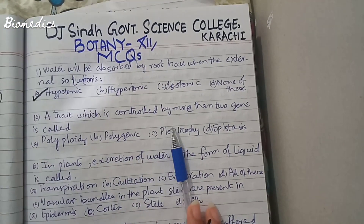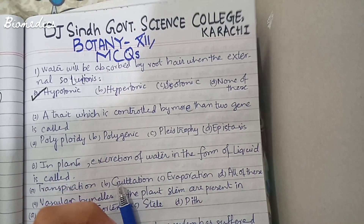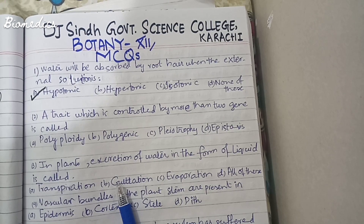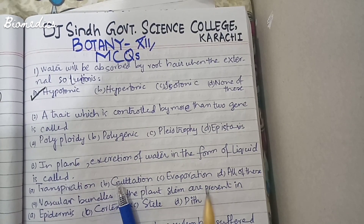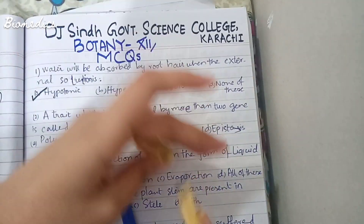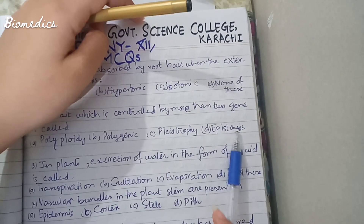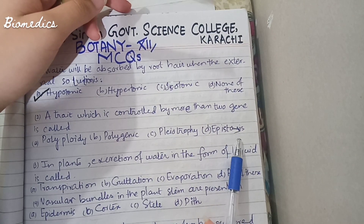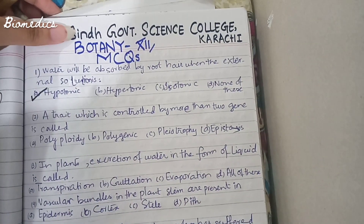The next question: a trait which is controlled by more than two genes is called — what? We will discuss one more option to clearly identify the best answer. Many people know epistasis is not the answer, because epistasis is basically a gene which alters the expression of another gene, so it is not the answer here.